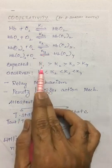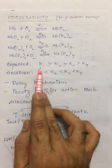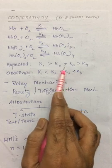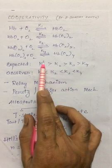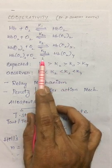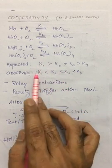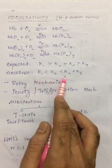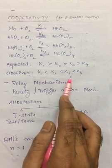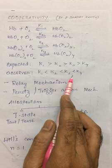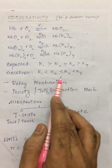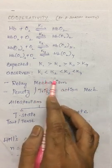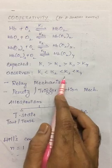In general, the trend expected for the stepwise stability constant is to drop. But what we find in the case of hemoglobin binding reversibly to dioxygen is there is an increase in the stepwise stability constant, and that increase is exponential. So how do we explain the exponential increase in the stepwise stability constants?